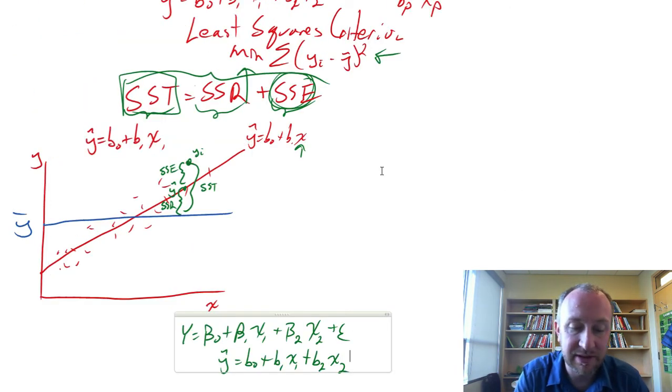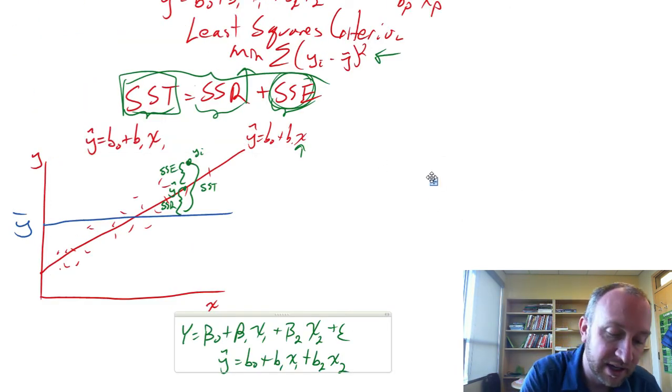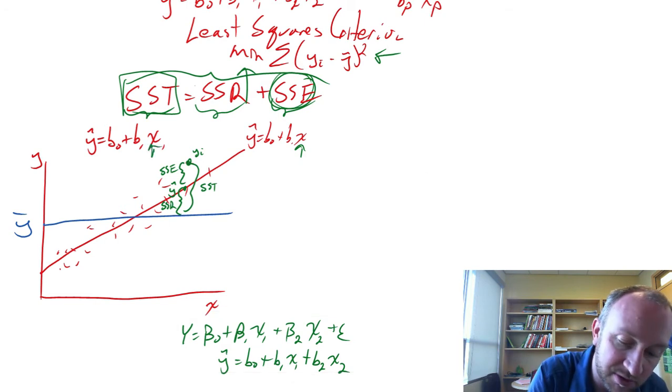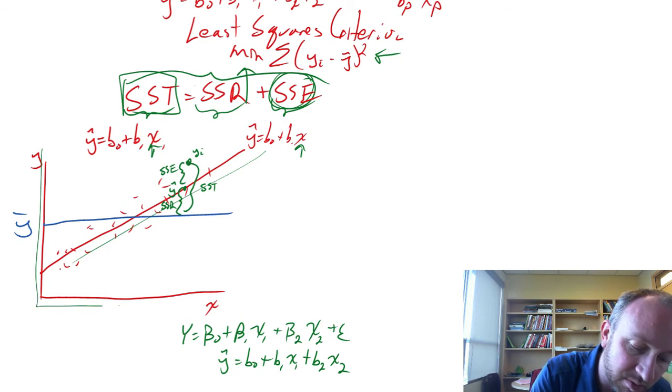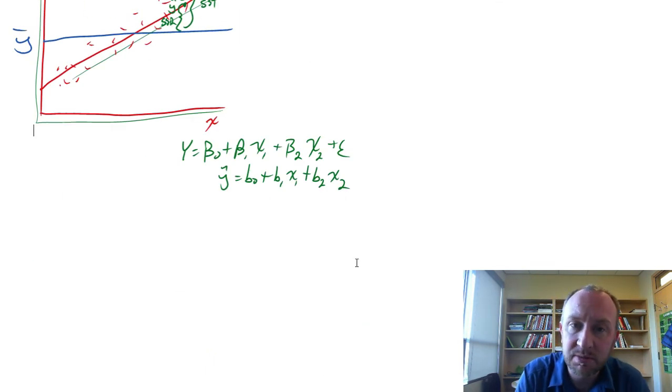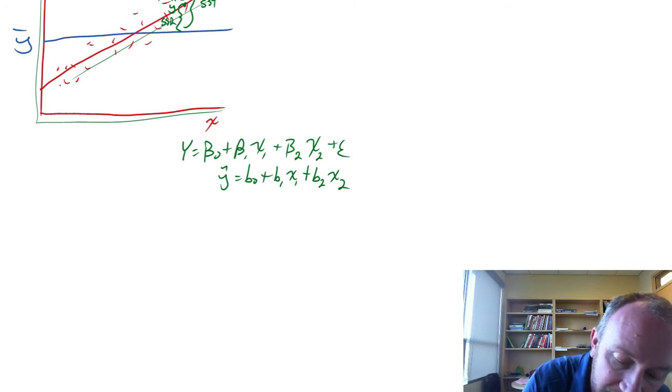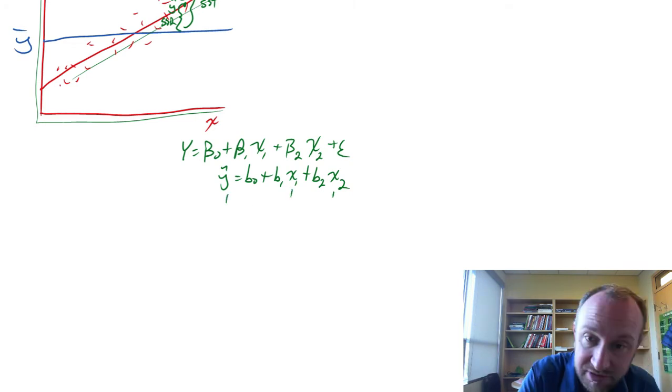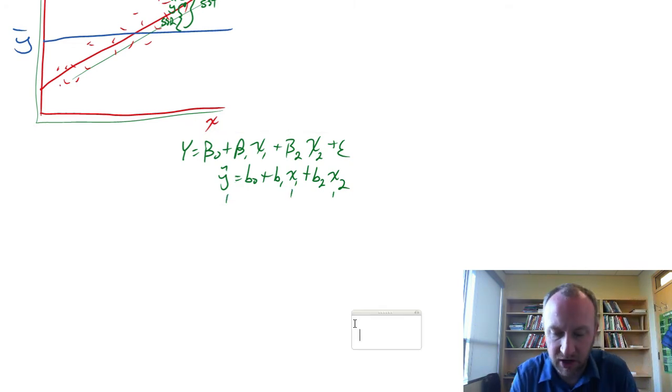Well, when we were doing the simple linear regression, it was one independent variable. We are estimating a line, right? We're estimating this line in two-dimensional space. When we go into a multiple regression, now I have one, two, three dimensions. So let me give myself lots of room here to try to draw this. So use your imagination. My artistic abilities here are clearly limited.